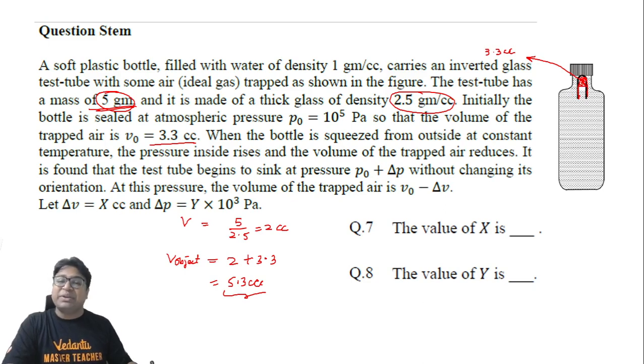Now, as we keep on increasing the pressure by compressing this soft plastic bottle, we are increasing the value of the surrounding pressure. So that is forcing this air to go inside, thereby decreasing the volume. This particular volume remains fixed, but this particular volume decreases.